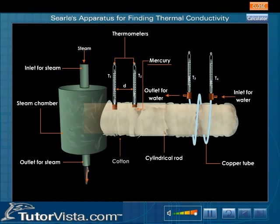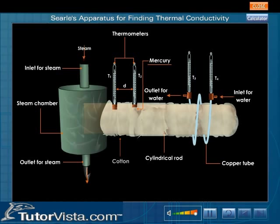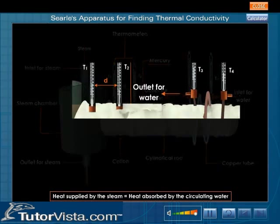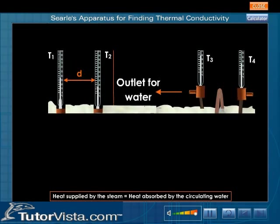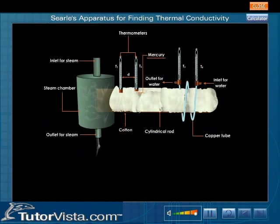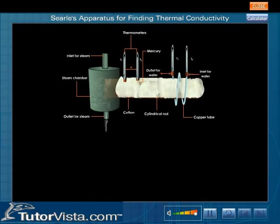At steady state, the heat supplied by the steam is equal to the heat absorbed by the circulating water — that is, all thermometers show fixed but different temperatures. Let m be the mass of water flowing in time t seconds.